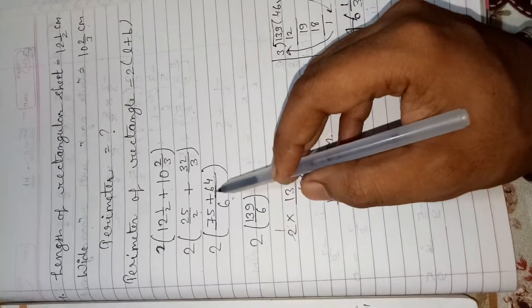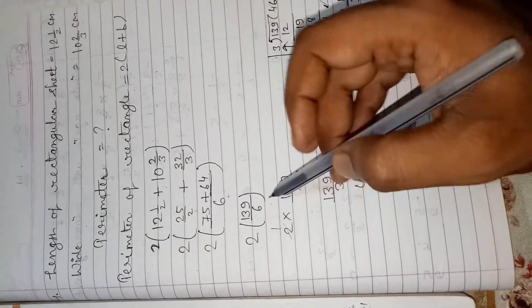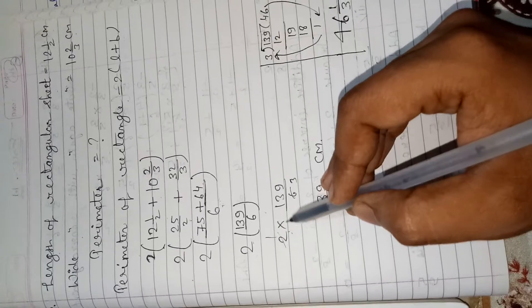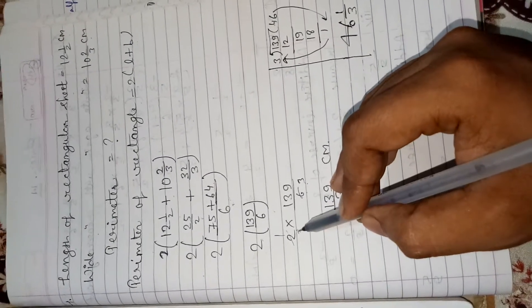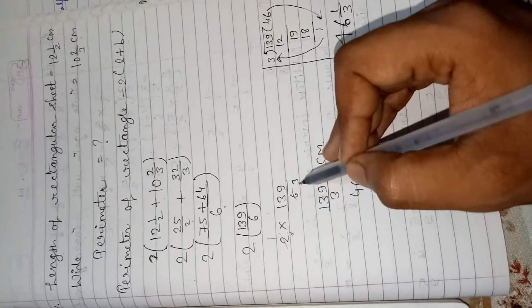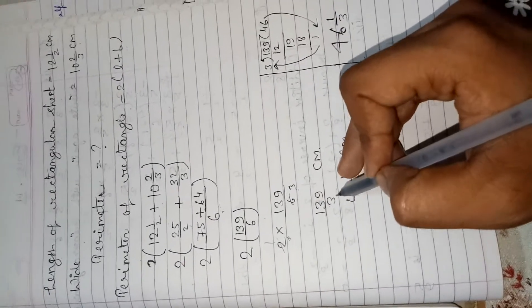Now 2 bracket, the sum of 75 and 64 is 139 upon 6. Now open the bracket. Then sign of multiplier 2 into 139 upon 6. They are reduced 2 and 6 with the table of 2. 2 ones are 2 and 2 threes are 6. Now the fraction is 139 upon 3.